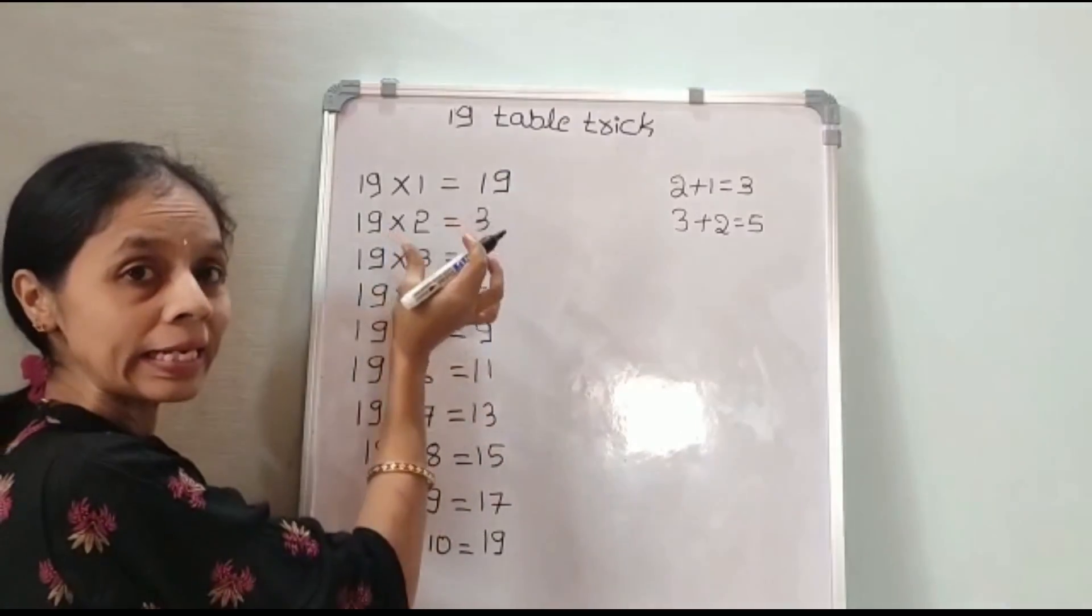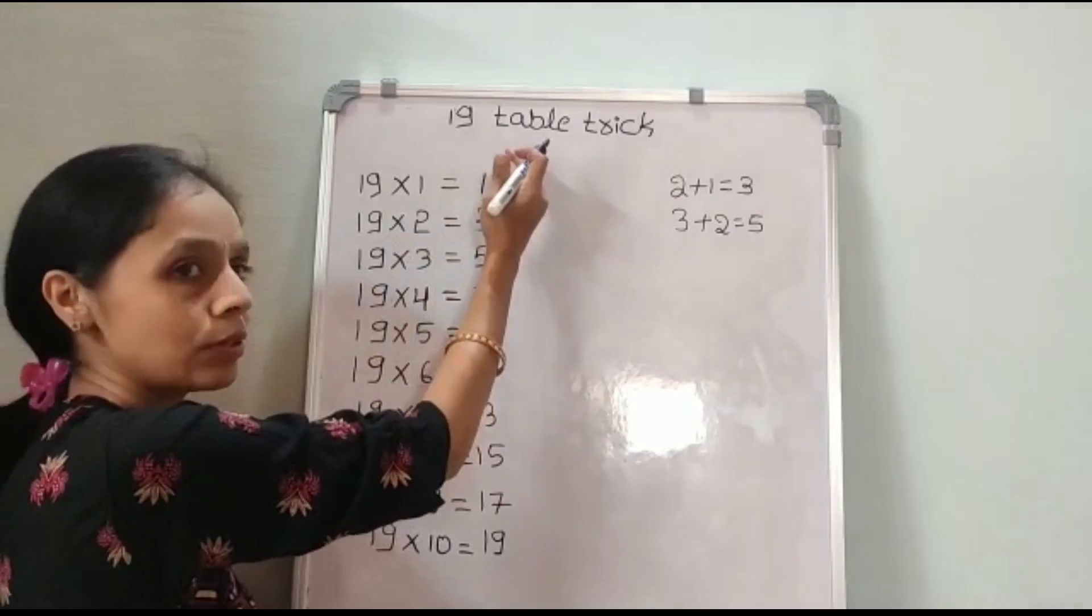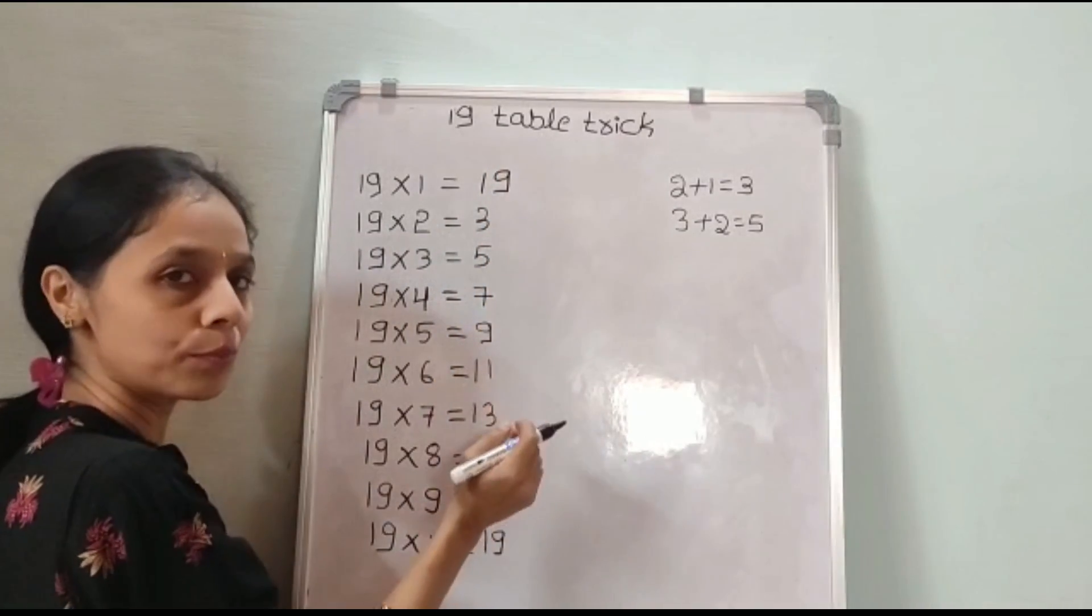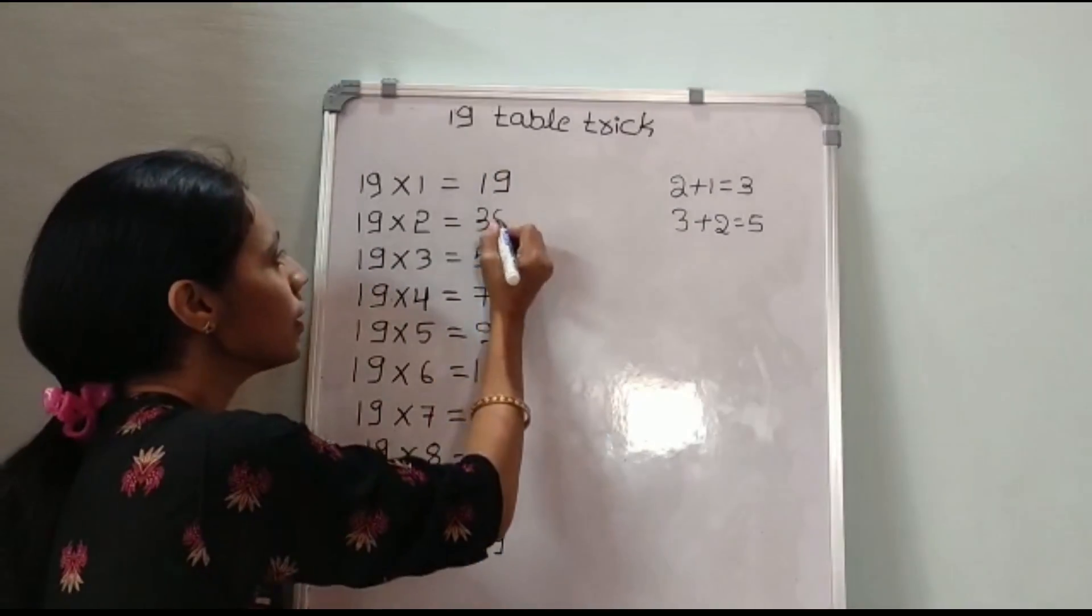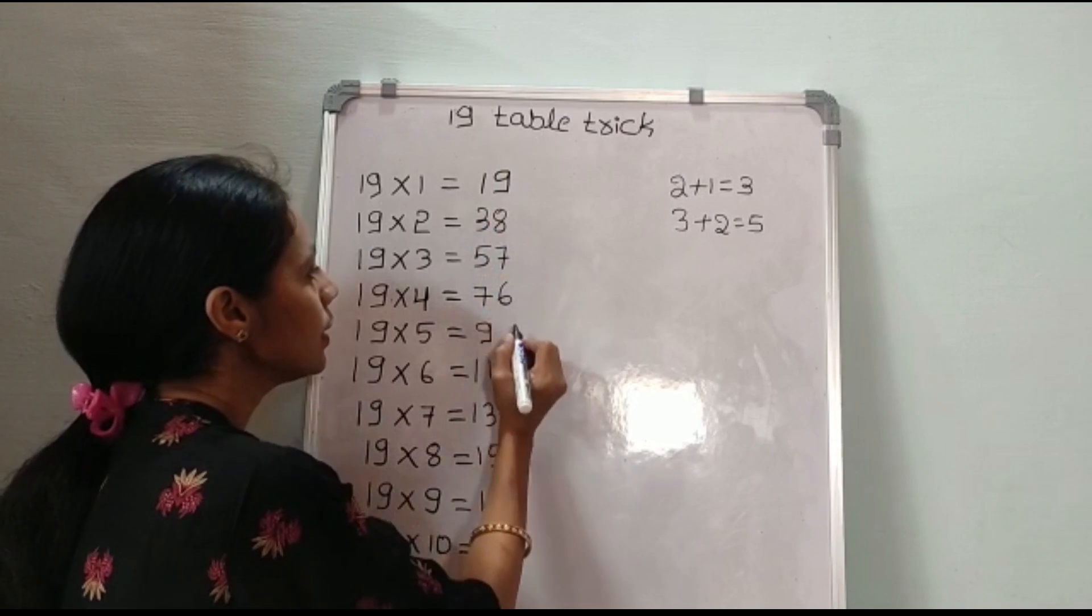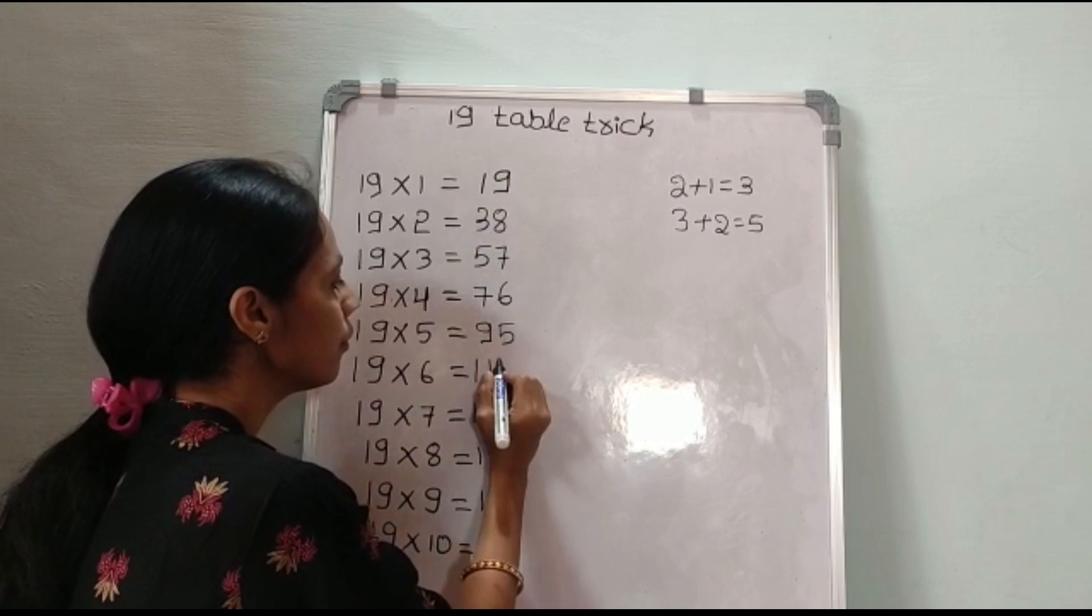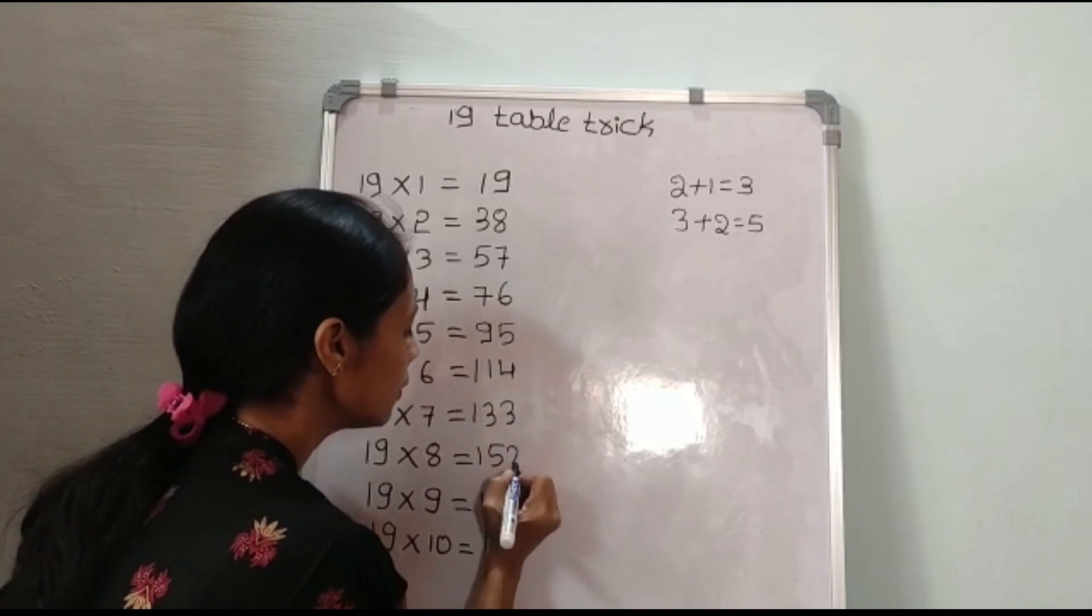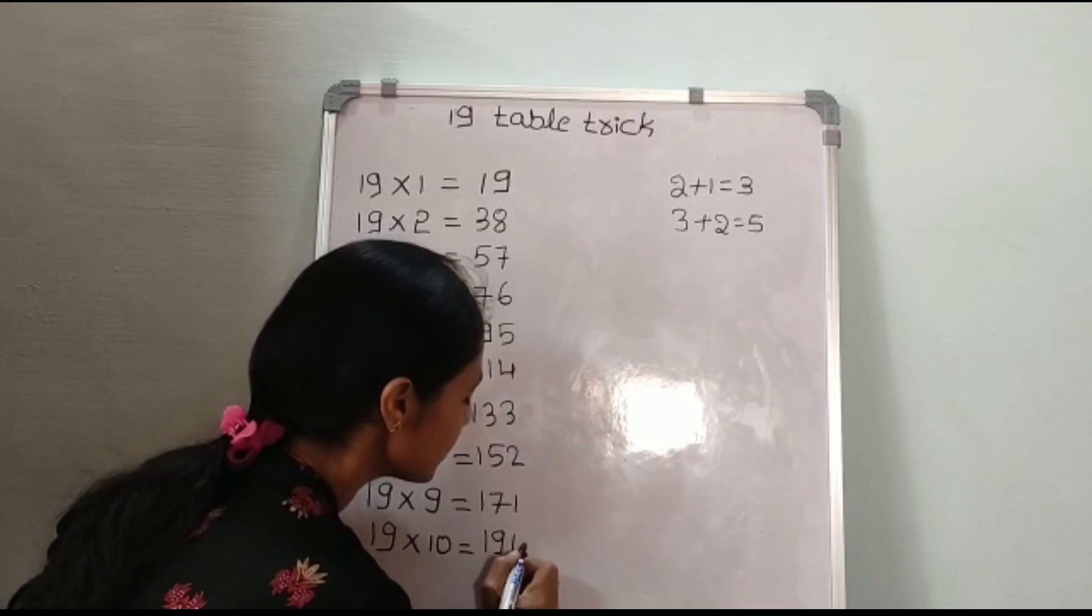We write in decreasing order up to 0. Consider 9, write in decreasing order up to 0. So, 9, 8, 7, 6, 5, 4, 3, 2, 1, 0.